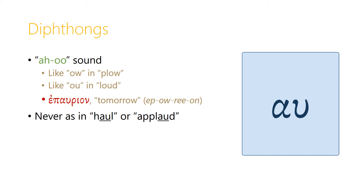The diphthong alpha-upsilon is pronounced 'au' in Greek, like the English 'plow' or 'loud', and so the Greek word for 'tomorrow' is pronounced 'epaurion'. Again, the alpha-upsilon are never pronounced like the 'au' in the English 'hall' or 'applaud' — alpha-upsilon always combine to make the 'au' sound.